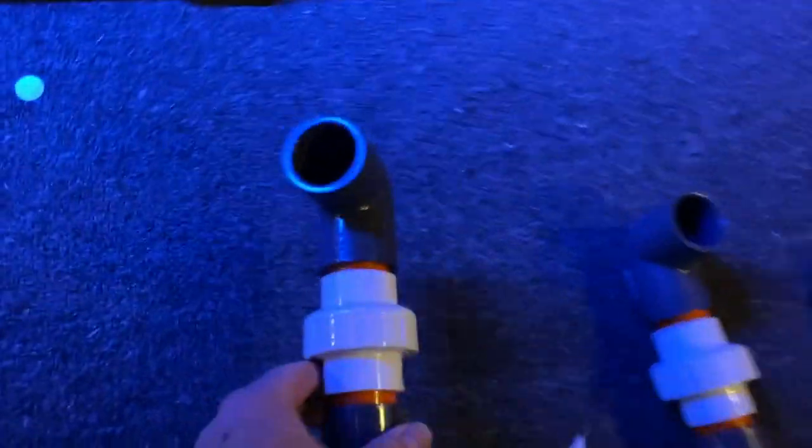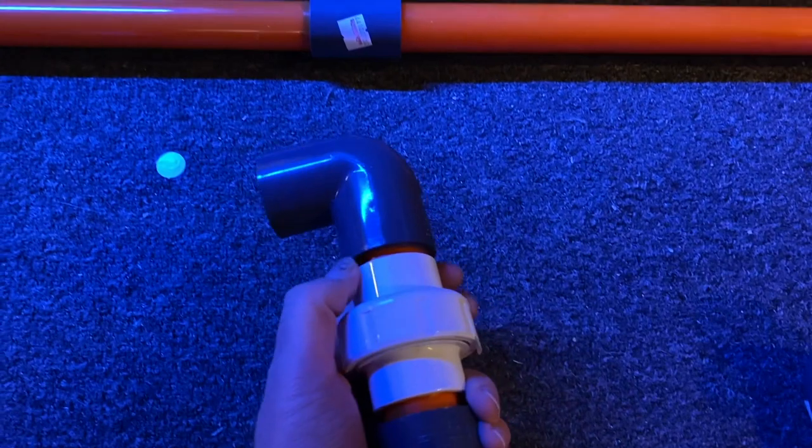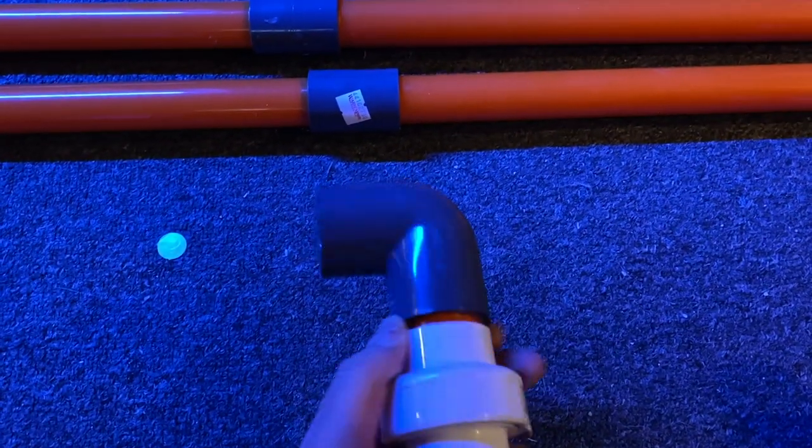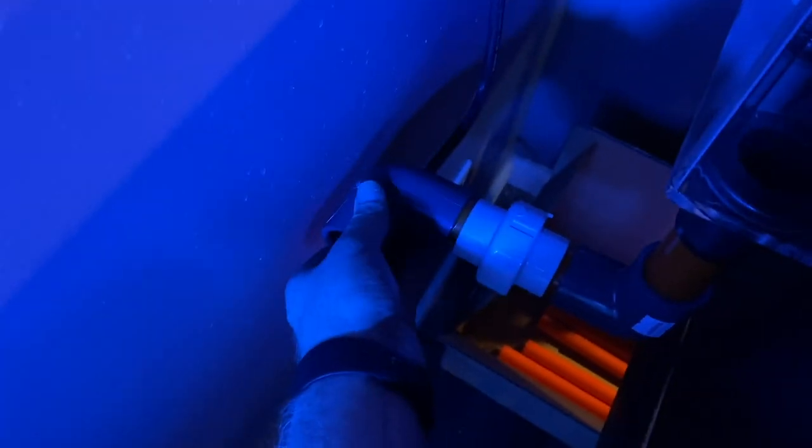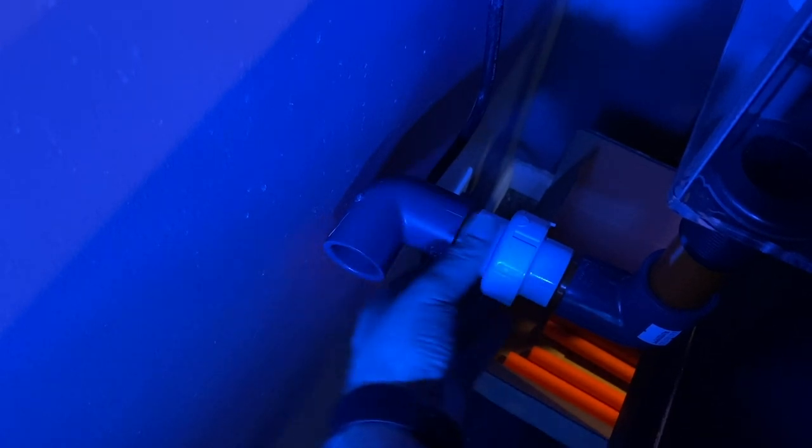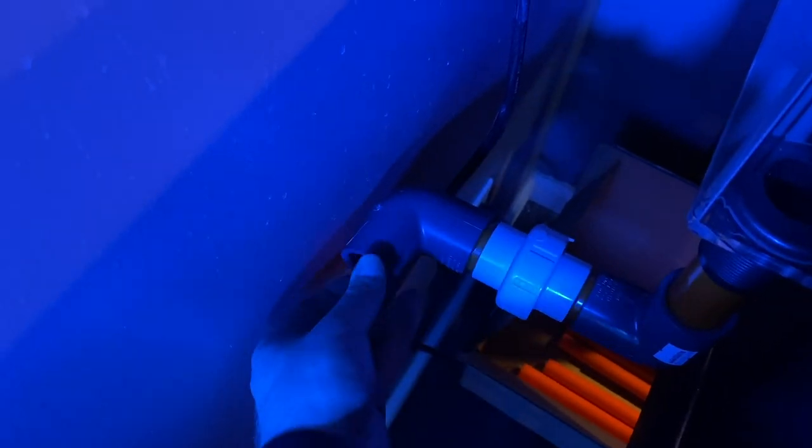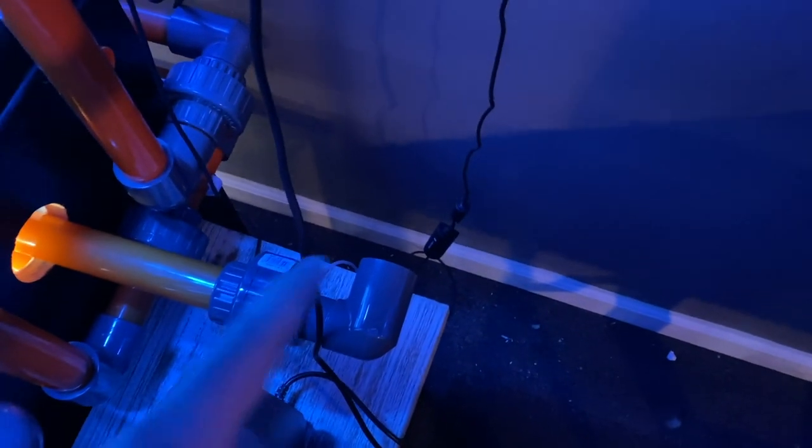Two 90s connected to a union. Now this little nifty setup allows me to pivot the 90 degree at any angle using the union. So if we head behind the 40 breeder here, we can see how one 90 connects to the overflow box and the other one points towards the 135. Now this 90 will be able to pivot up and down once you loosen the union here, which will give you an angle when coming down to meet with the main drain right here.